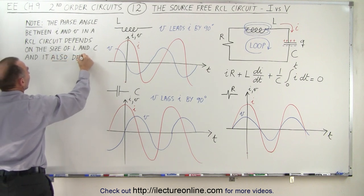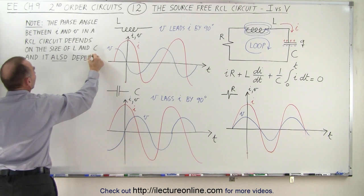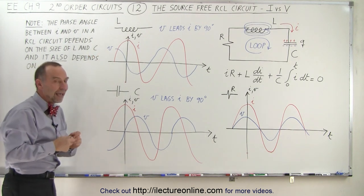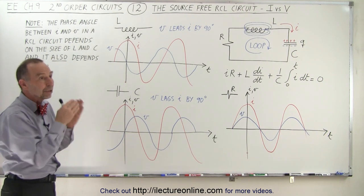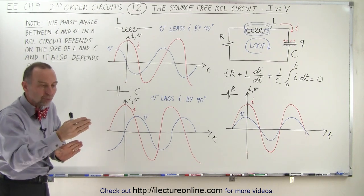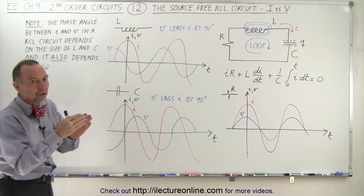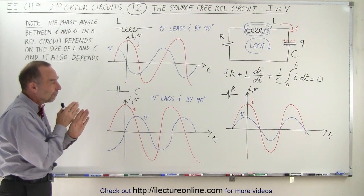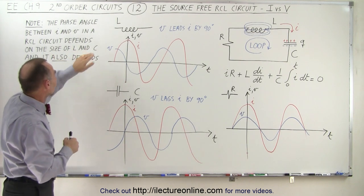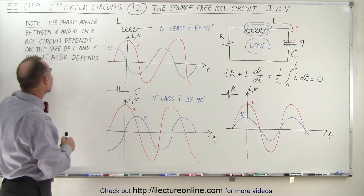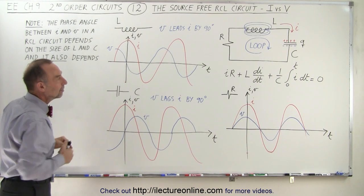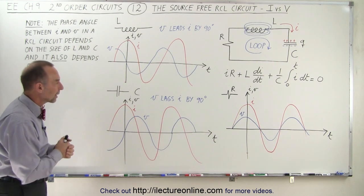Also depends on the frequency omega because as the current changes more quickly, the inductor has a much bigger effect on the circuit than the capacitor. If the current changes more slowly, then the capacitor has a much bigger effect than the inductor. So the relative phase angle between the current and the voltage depends on the size of the inductor and the capacitor. It also depends on the value of the frequency or the angular frequency inside the circuit. And we'll talk about that a little bit more when we get to it.